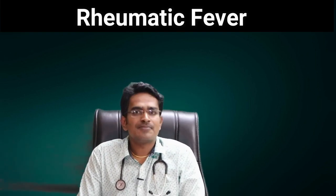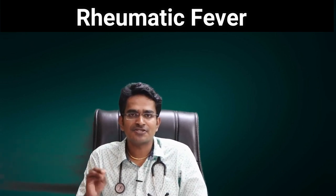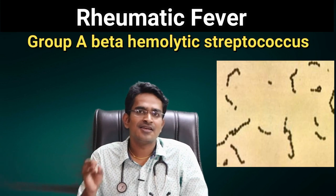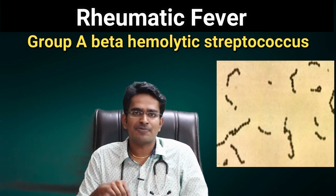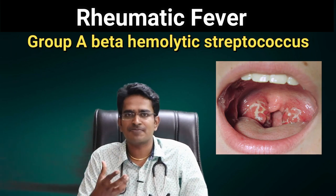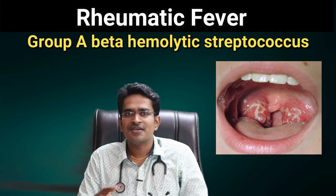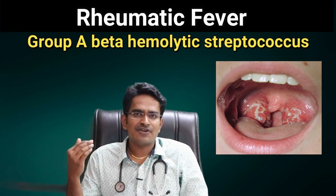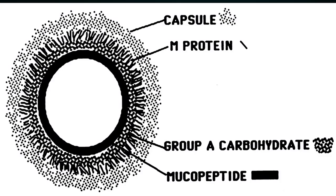The main cause of rheumatic fever is a Streptococcal infection — specifically the Beta-Hemolytic Streptococcus organism. In the cell membrane of this Streptococcus organism, there is a protein called M-protein, which is highly antigenic.